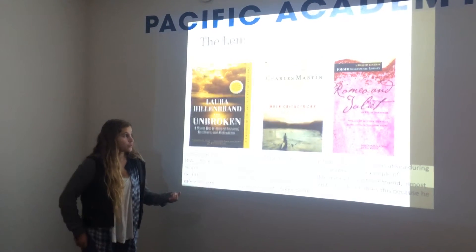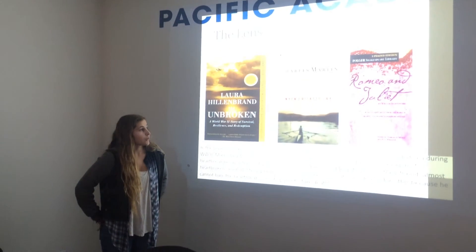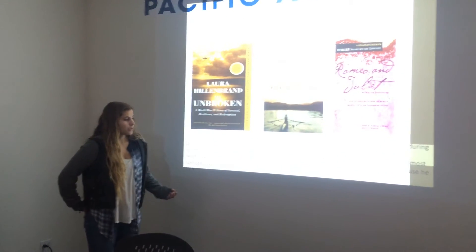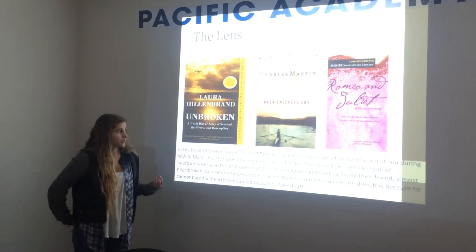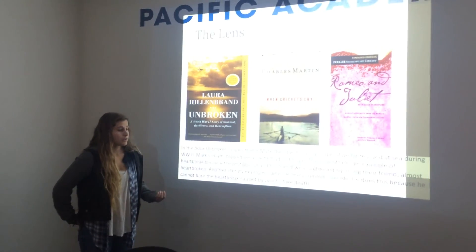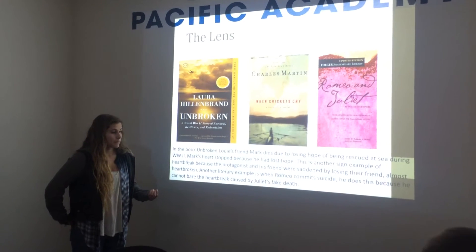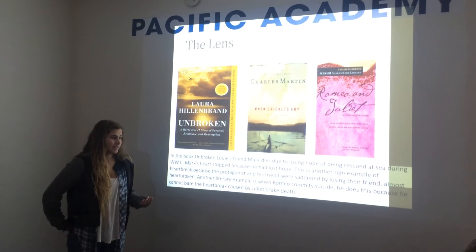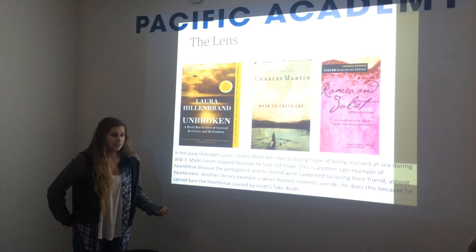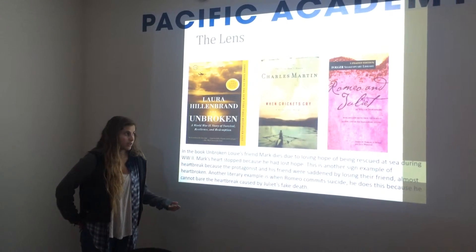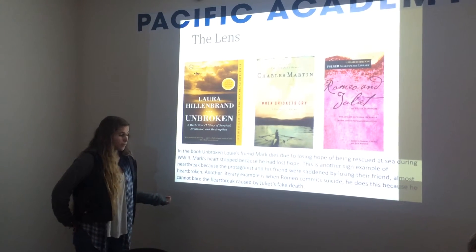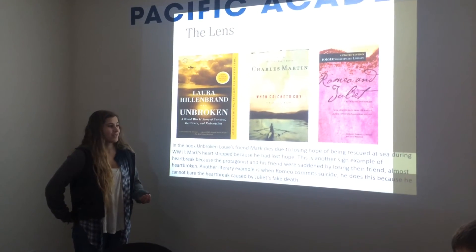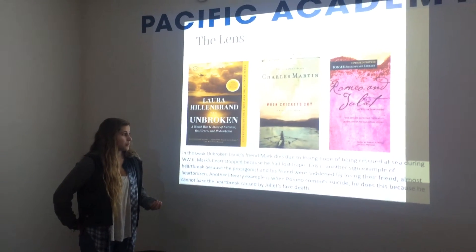In Romeo and Juliet, the heartbreak lens is when Romeo kills himself because Juliet is supposedly dead. But when he kills himself, Juliet isn't actually dead — she faked her death. Then when Romeo dies, Juliet kills herself. And that's another form of heartbreak.